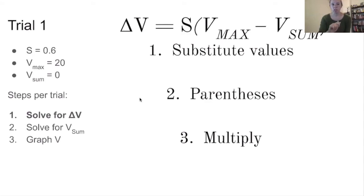So again, the steps for each trial, the first one is going to be to solve for delta V. So that's what I have shown on this slide right here. So the first thing that we're going to do when we're solving for delta V is we're going to substitute out those values. So we don't know delta V yet. We can sub out S, so S was 0.6, and then we're going to multiply that in parentheses. V max equals 20 minus the V sum currently is 0. So we've substituted out the values that are going to be used in this trial of the equation.